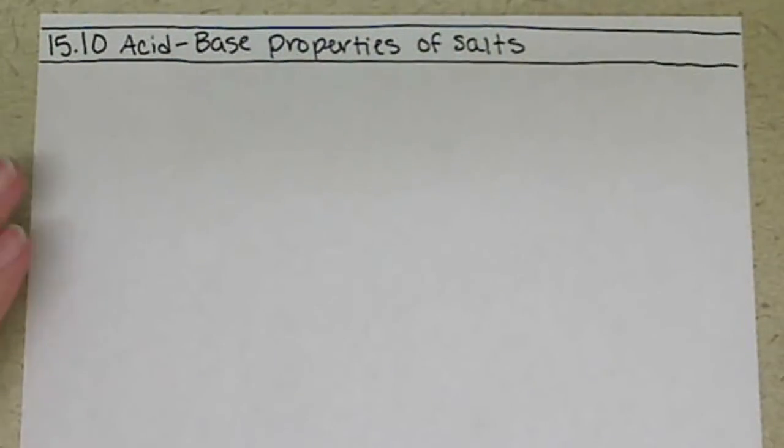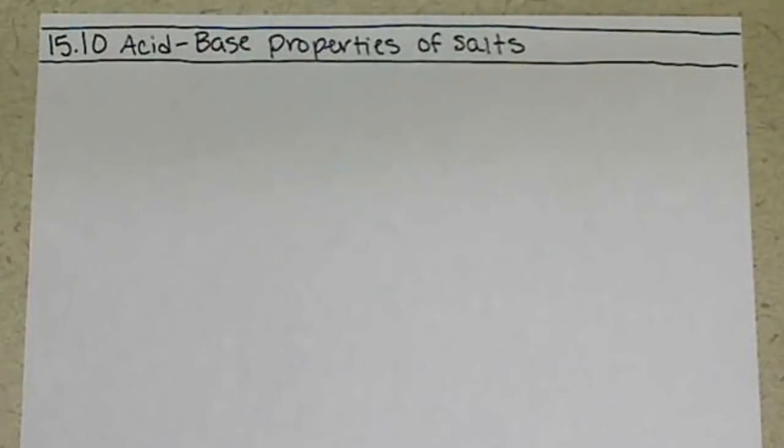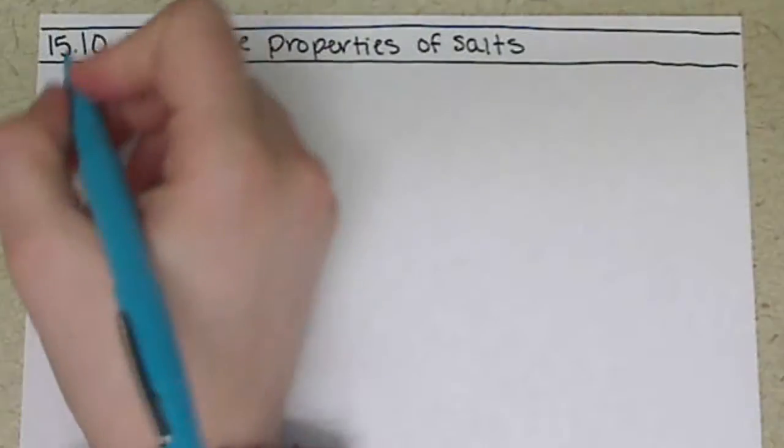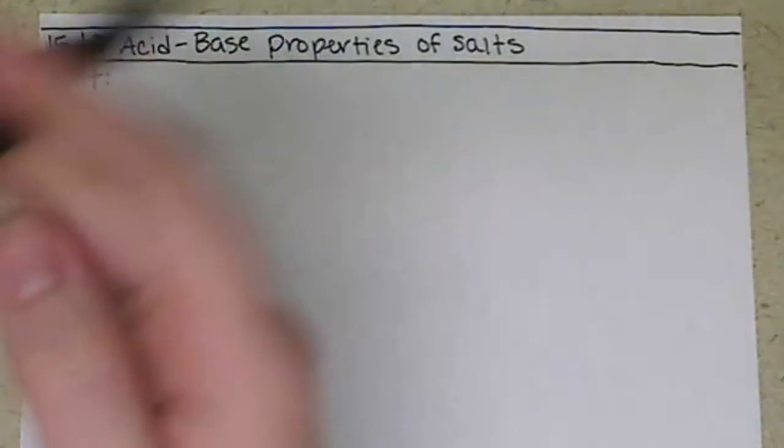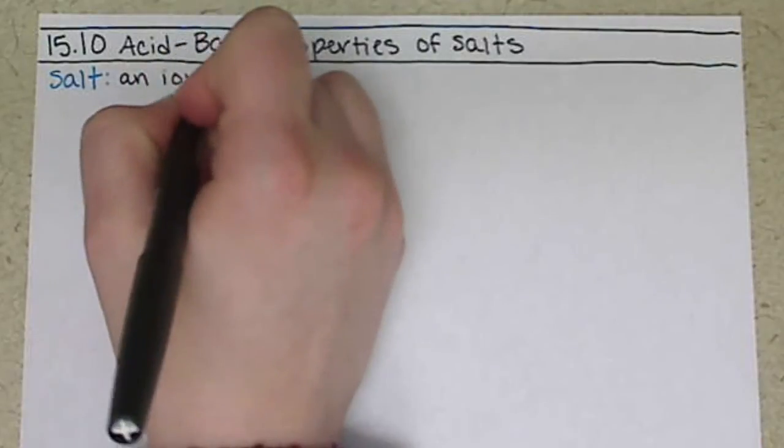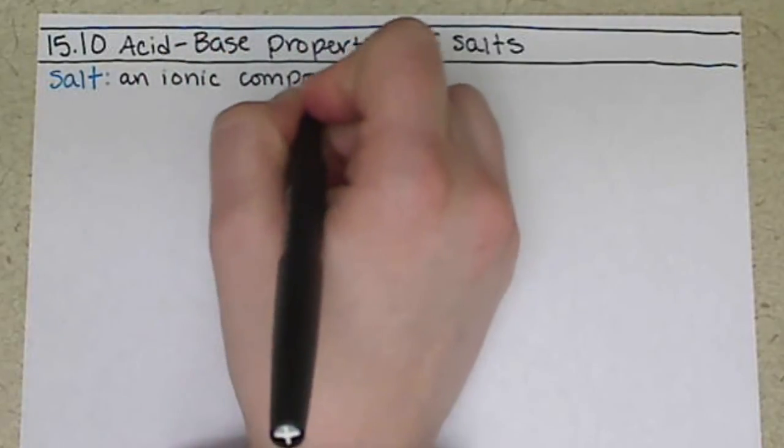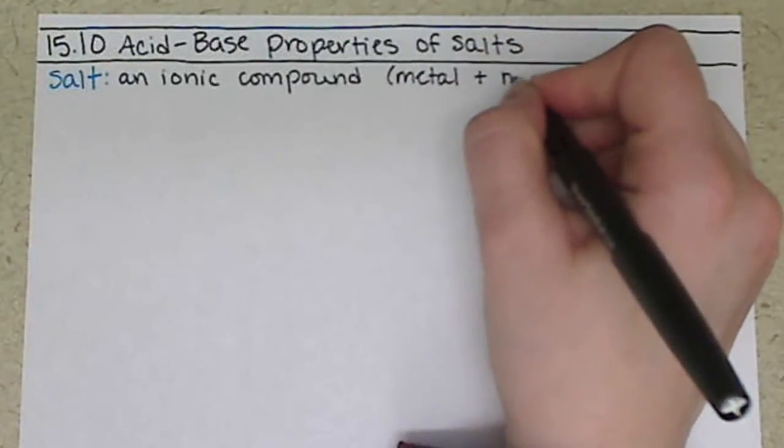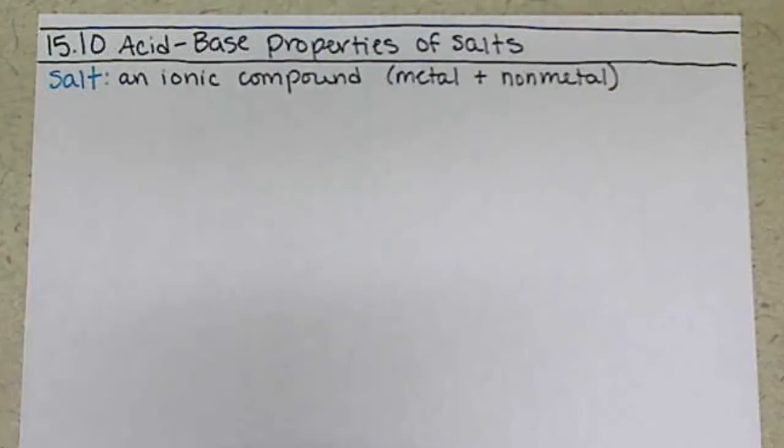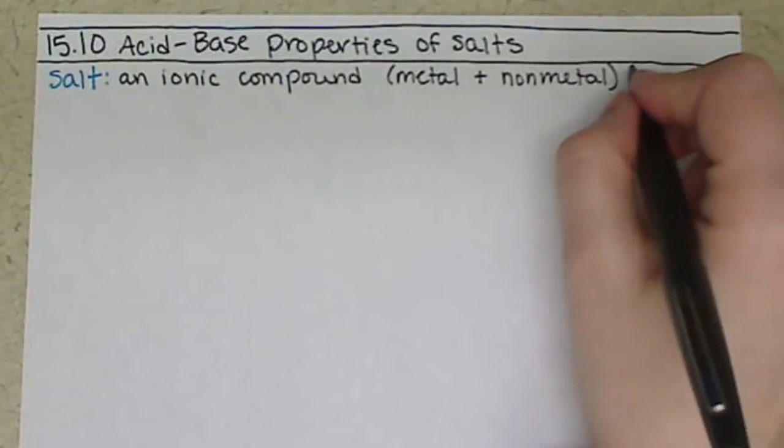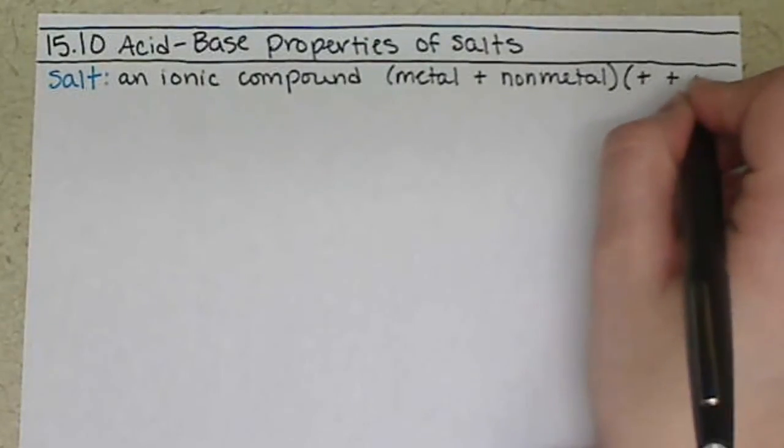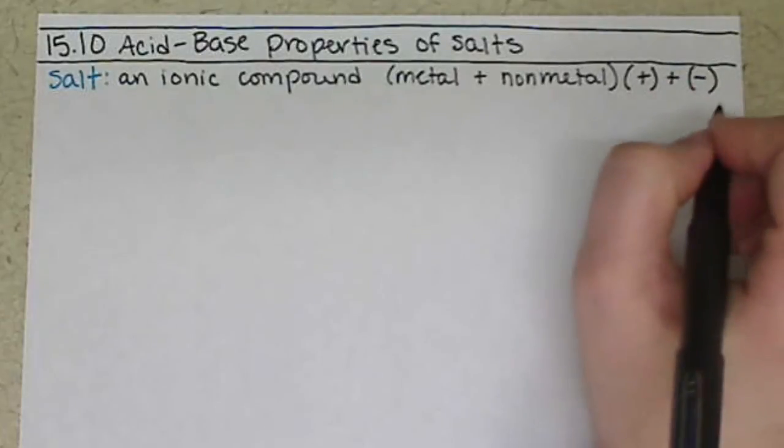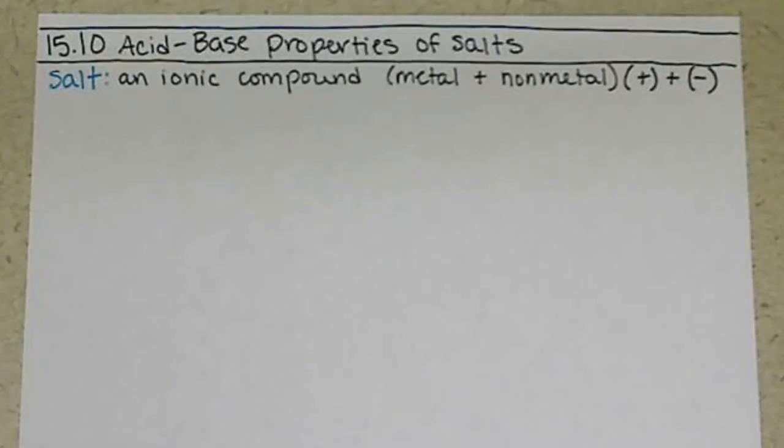So what we're going to be looking at is solutions that don't have something that obviously has a proton in it. Salts, just to remind ourselves what a salt is, is basically just an ionic compound. So we're looking at a metal plus a non-metal, or cation, something positive plus something negative, cation plus an anion, because we'll see some that are polyatomics.